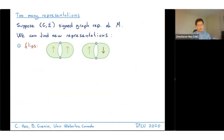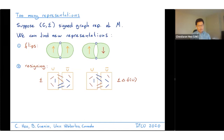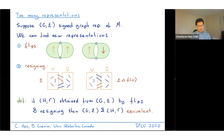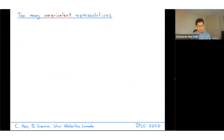One reason for this is that it is easy to construct new representations from old ones. You can do a flip, rearranging what happens along a two-separation, or a resign. We say two representations are equivalent if you can go from one to the other by a sequence of flips and resignings, and we can treat a set of equivalent representations as a single representation. However, we in fact have too many inequivalent representations.